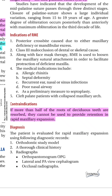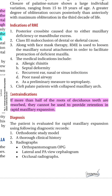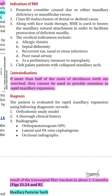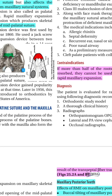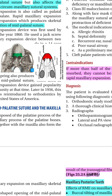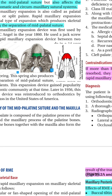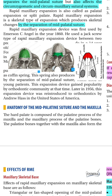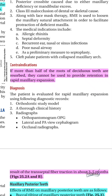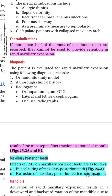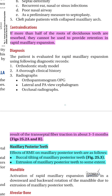Using RME appliances is indicated for posterior crossbite, Class III malocclusion that is dental or skeletal, some cleft palate patients, and problems with the nasal airway, because changes in the maxilla affect the nose. It is contraindicated to use this kind of appliance when the deciduous tooth has resorbed half of its root, as we will not have enough retention for the rapid maxillary expansion.